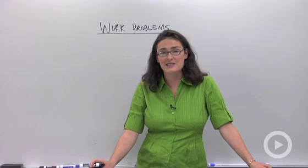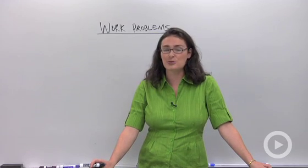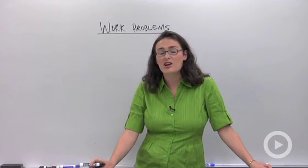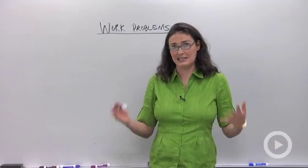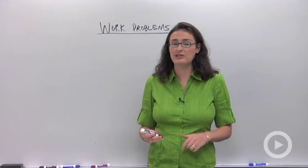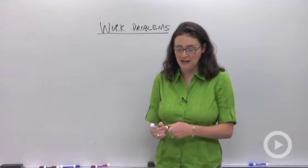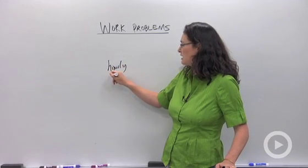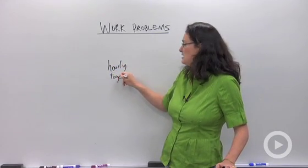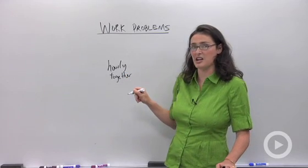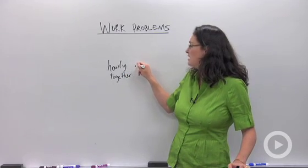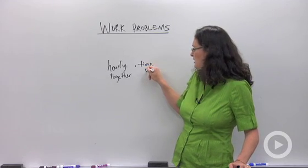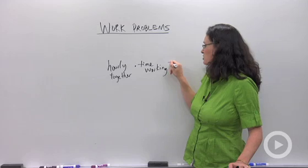What you do instead is figure out what fraction each person could do by himself per hour and then add those fractions together so you'll know how much they're completing together each hour. Once you know how much they do together each hour, you're going to have an equation that looks like this. Their hourly fraction together, hourly together is probably going to be something that you had defined by finding common denominators. Their hourly fraction together times the time they spent working, time working is going to equal one total job.